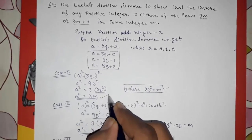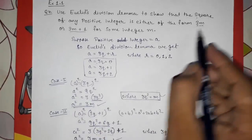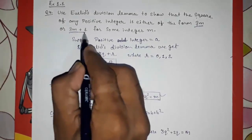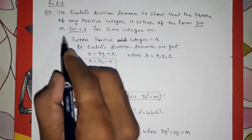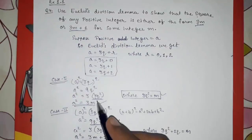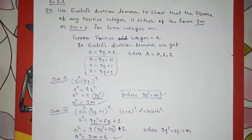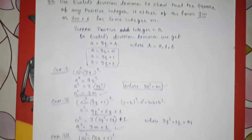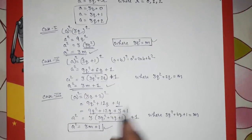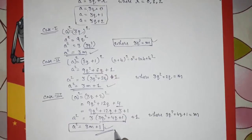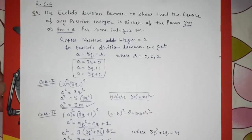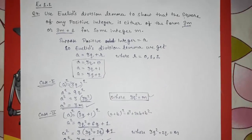So in Case 1 we get 3m, and in Cases 2 and 3 we get 3m + 1. This proves that the square of any positive integer is either of the form 3m or 3m + 1. Thank you so much for watching. If you like it, please subscribe to my channel.